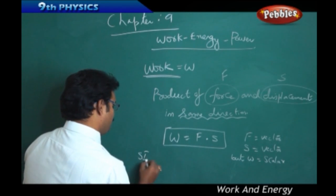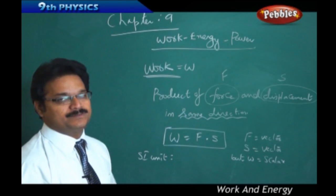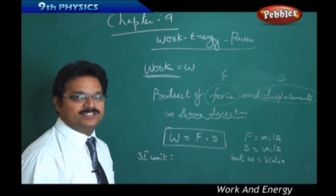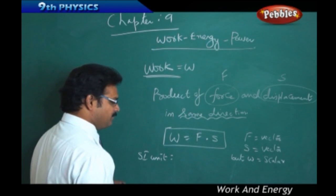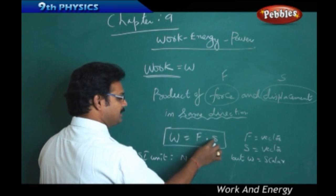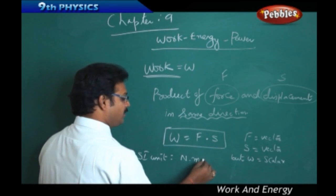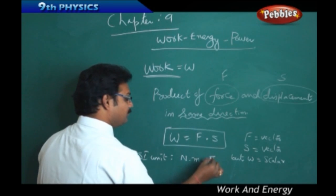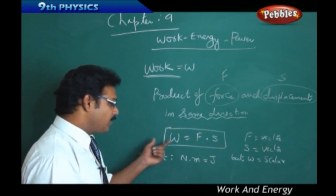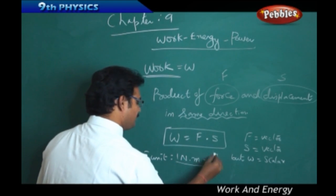Now, if you take the unit of work in SI system, let me tell you the SI system, then I will tell you the CGS system. In SI system, force unit is Newton. Displacement unit is meter. And this Newton meter can also be called as Joule. So, SI system, work unit is Joule. And 1 Joule equals to 1 Newton meter.